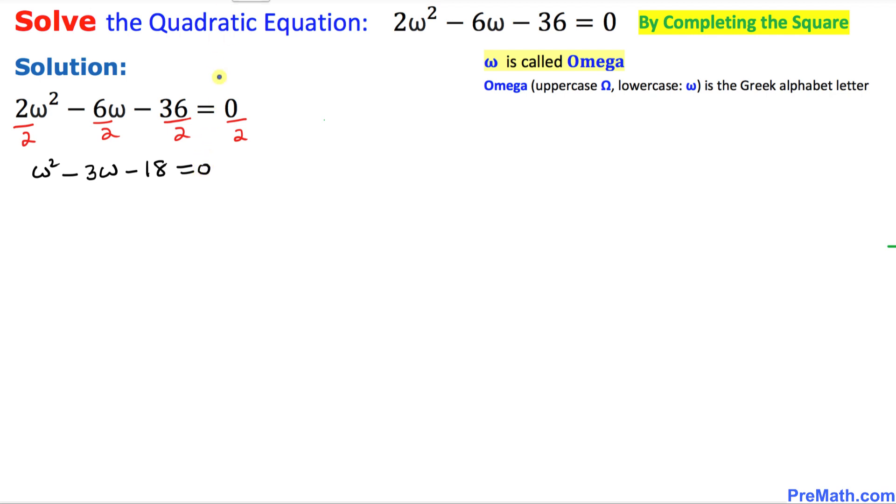Now we are going to solve this quadratic equation by completing the square method. The very first step is we are going to move this constant part on the right hand side.